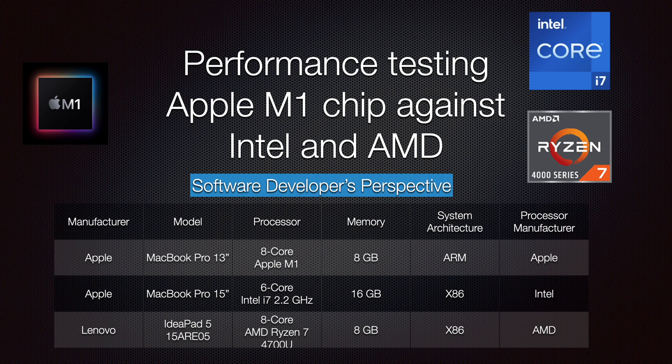Hello YouTube. In this video we are going to performance test three processors: Intel, AMD, and Apple. I have three laptops, each with a different processor. The first is a 2020 Apple MacBook Pro 13-inch with Apple M1 chip and 8GB RAM. The second is a 2018 Apple MacBook Pro 15-inch, 6-core Intel i7 2.2GHz with 16GB RAM. The third is a 2020 Lenovo IdeaPad 15-inch.